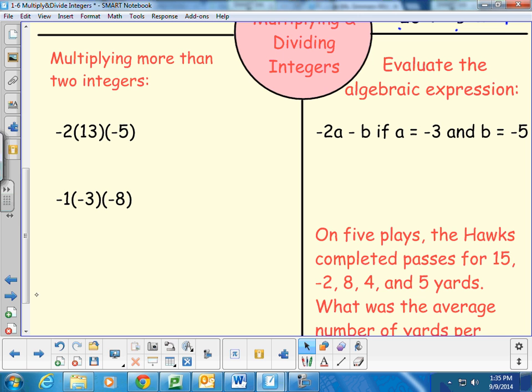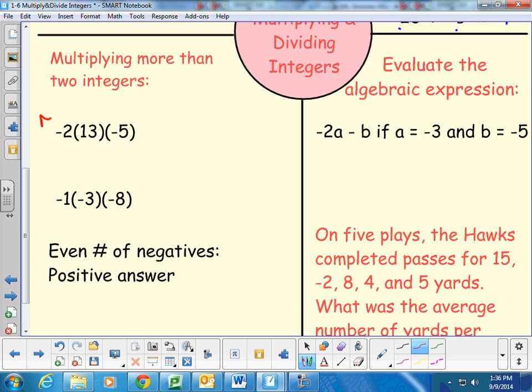So those are the rules for 2 integers. The rules when there is more than 2 integers, if there's 3 or more, there's some rules to do that. Okay? Some rules are if there's an even number of negatives, I'm sorry, struggling today. Even number of negatives, the answer is going to be positive. So here, on this first one, I have two negatives, so I know that my answer is going to end up to be positive. And you can just multiply as normal.